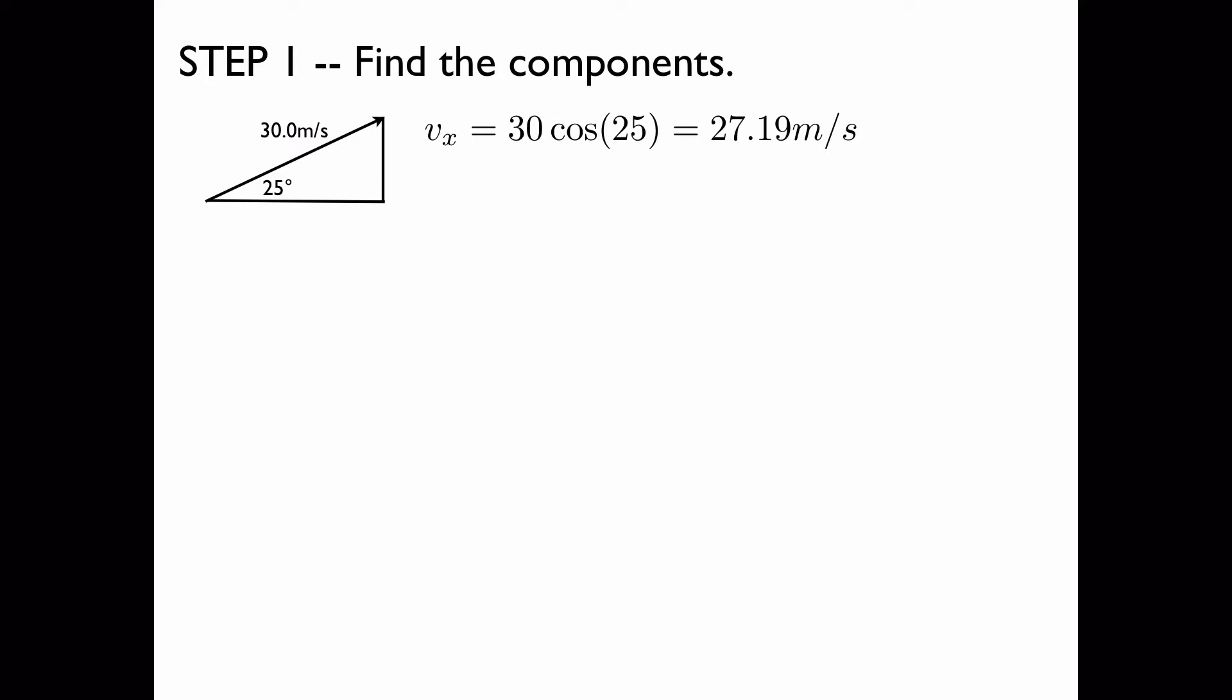As discussed in the previous video 3.1, you multiply the length of the hypotenuse times the cosine of the angle. This gives 27.19 meters per second. Although we only have two significant figures in the angle, we are going to include a couple extra significant figures now and then round the answer once we get to the end. The vertical component is found similarly, except in this case you use sine.